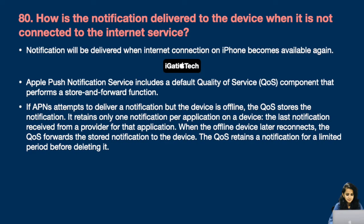The QoS retains only one notification per application on the device — the last notification received from a provider for that application. When the offline device later reconnects, the Quality of Service forwards the stored notification to the device. The Quality of Service retains a notification for a limited period before deleting it.